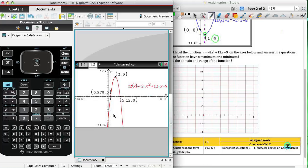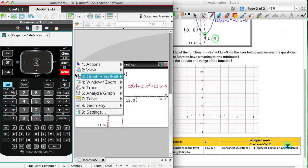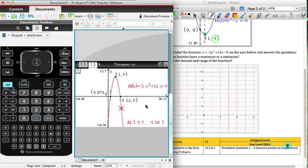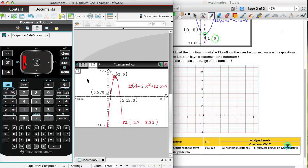My y-intercept is at -9. Again, you can use the trace function for that, and so I'm going to use the trace function combined with the cursor keys. I'll just keep going until we get right there to the y-intercept.